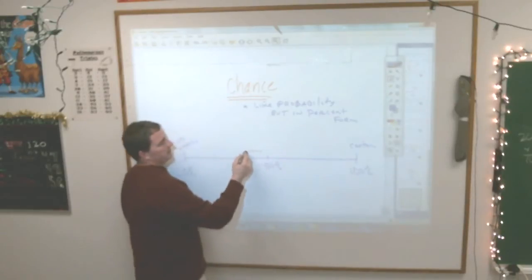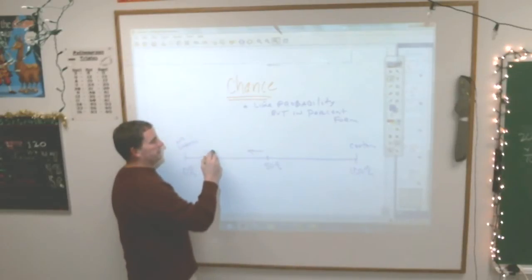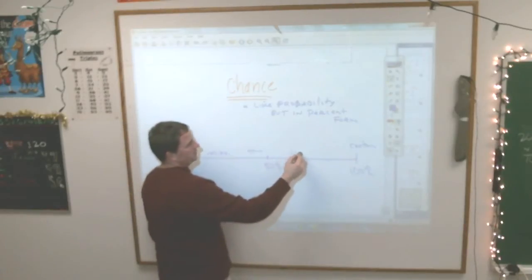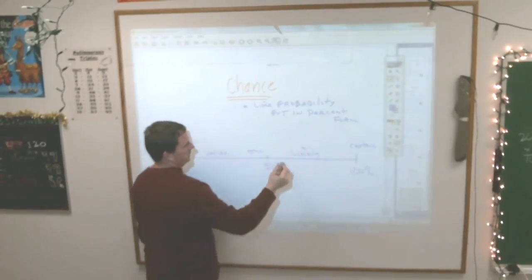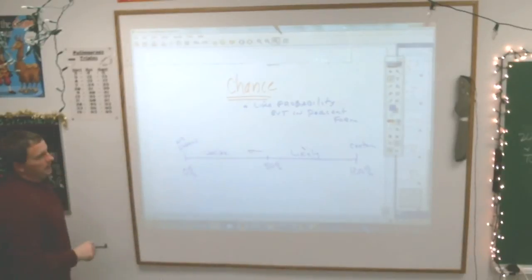So anything less than 50 percent is going to be unlikely. Anything more than 50 percent is going to be likely. So if they said the chance of rain is 60 percent, is it going to rain? Maybe. It's likely to rain would be what you would say, but still not 100 percent sure that it's going to rain.